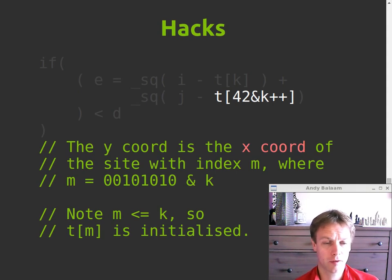However, we know if you AND with something, you're always going to end up with something less than or equal to it. So we're okay. So basically it picks this, this number, which is 42 and k, and you can see in binary 42 is 00101010, which kind of picks a few random bits out of k. So it ANDs it with k, and then that's the index inside t of the x coordinate that we're going to reuse as the y coordinate at this point.